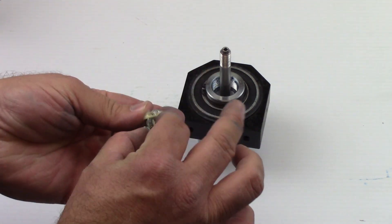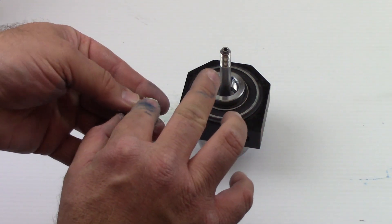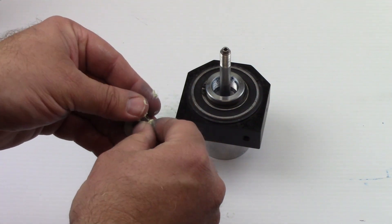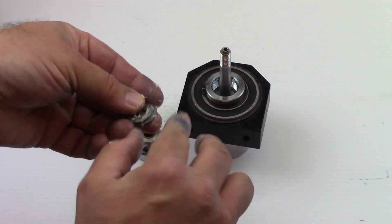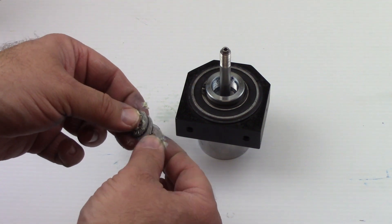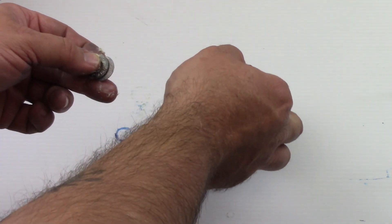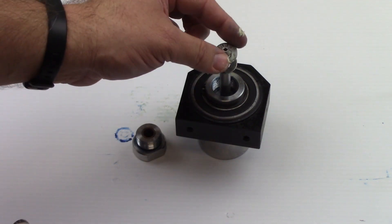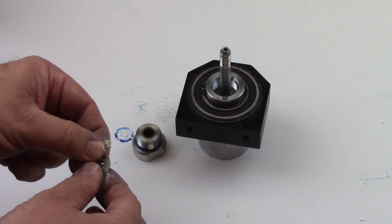Apply a light coat of general purpose grease to the thrust washers and thrust bearing. Install the thrust bearings and washers as follows: thrust washer, bearing, and thrust washer.